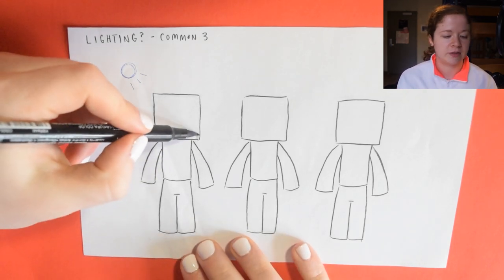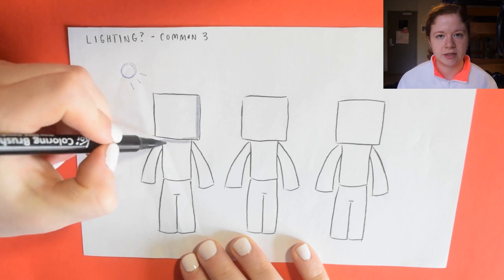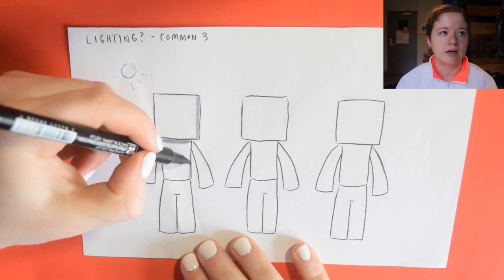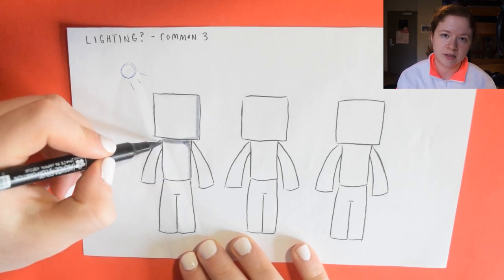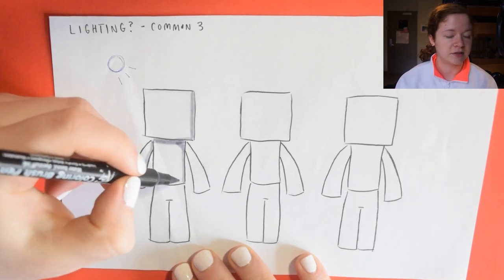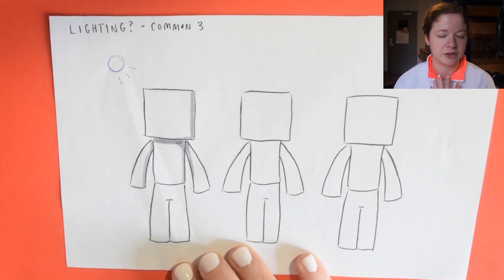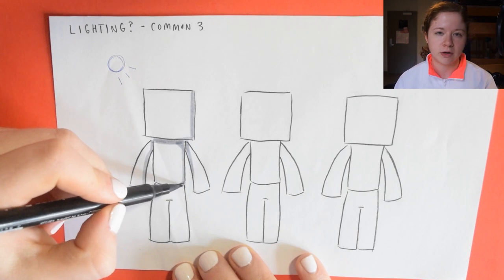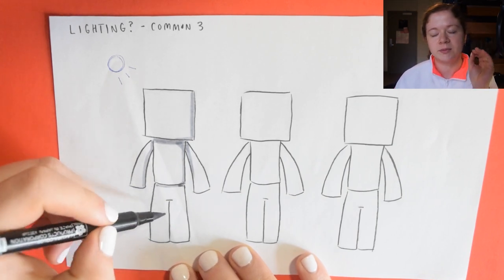For these first common three, the first one I've got it in the top left. Basically what you want to think of is where is the light not going to hit on your character. In this example, it's going to create a shadow under his neck and a lot on the right side of his body because it's coming from the upper left.